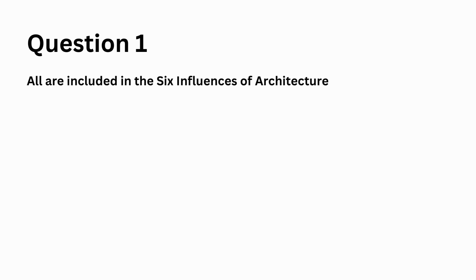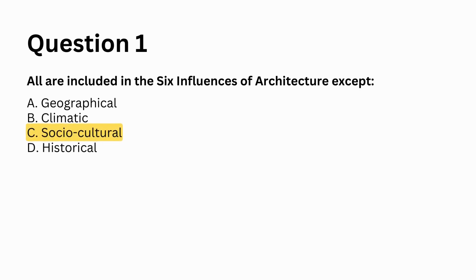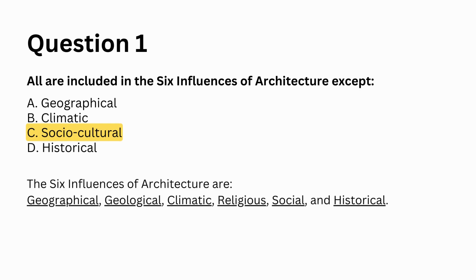All are included in the six influences of architecture except: a. Geographical, b. Climatic, c. Sociocultural, d. Historical. Answer: c. Sociocultural. The six influences of architecture are geographical, geological, climatic, religious, social, and historical.